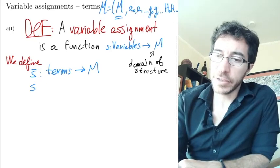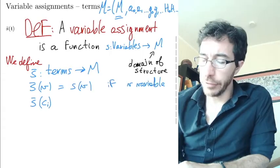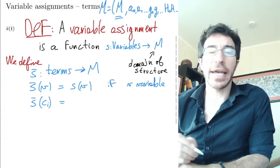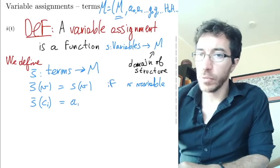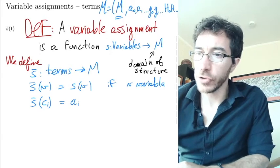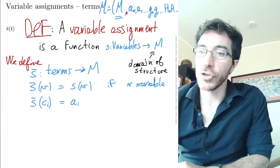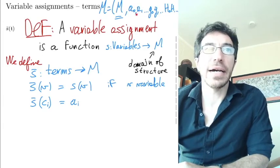So if you apply s bar to a variable, you're going to get s back. If you apply s bar to a constant symbol, we are going to get the interpretation of that constant symbol, which is this one right here. So up here, we have the interpretations for the constant symbols. So if you take the i-th constant symbol, we're going to get the i element in our interpretation.